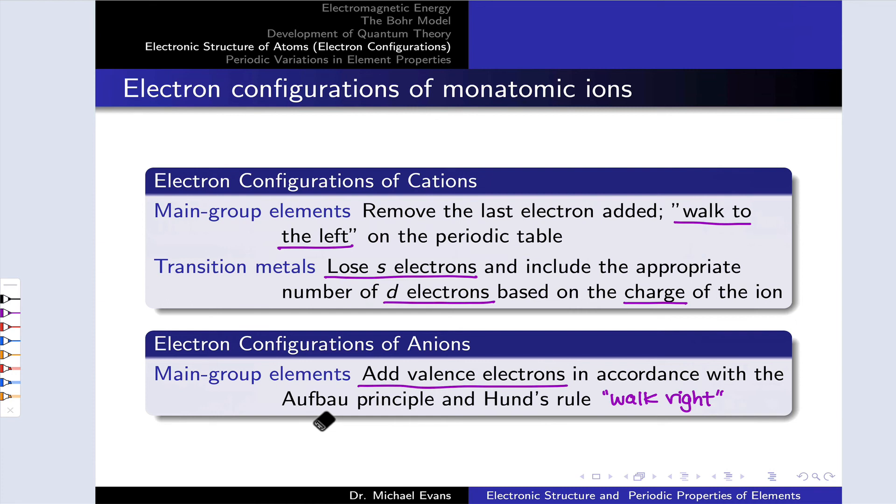The transition metals are a little bit different and a little bit complicated because of this issue of the number of electrons and the exact occupancy of the subshells affecting the relative energies of the s and d subshells. The way they work is we lose the s electrons first.